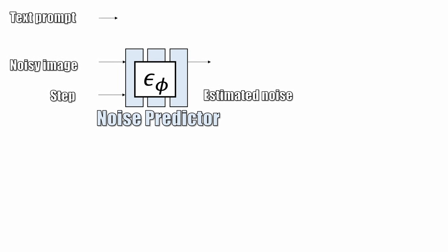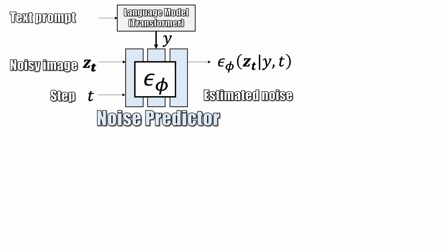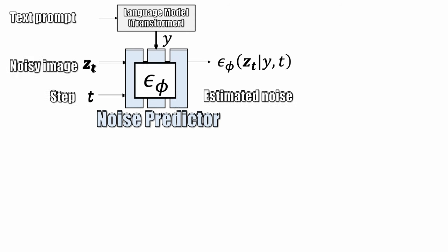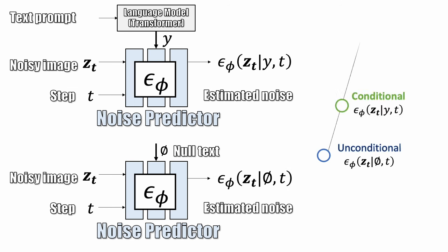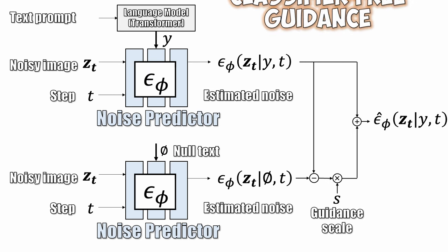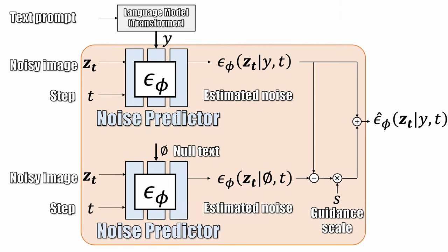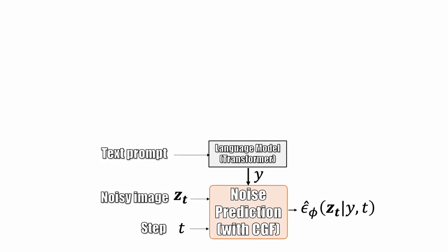We can control our generation by conditioning the model with a text prompt. However, the conditional generation itself doesn't work very well. A common trick is jointly training an unconditional model to estimate the noise with a no-text condition. We can then use the noise extrapolated away from the unconditional prediction. This is known as classifier-free guidance. Let's simplify this block by calling it noise prediction.